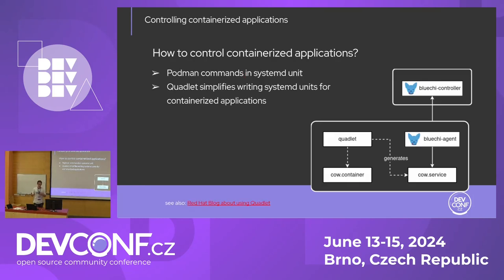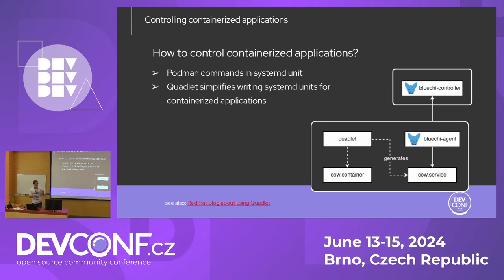After we've written a custom application, let's look at the key feature that BlueG wants to provide: controlling containerized applications. Since BlueG builds on systemd, we essentially get this out of the box, because we can already write systemd units where we start containers with simple podman run commands. And Quadlet, which is a project now in the podman repository, simplifies that even further. It is a systemd generator of sorts that reads Quadlet files ending with a .container file extension, and based on that generates systemd units that already contain all the different podman commands like podman run, podman stop, and so on.